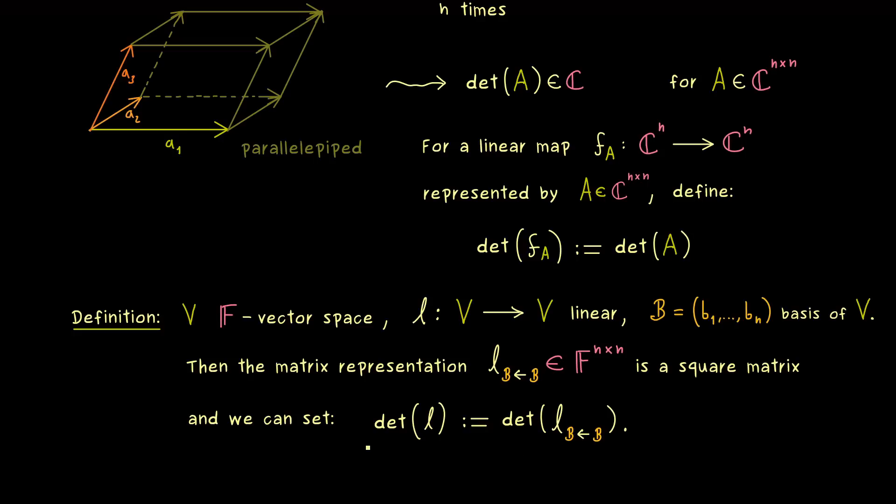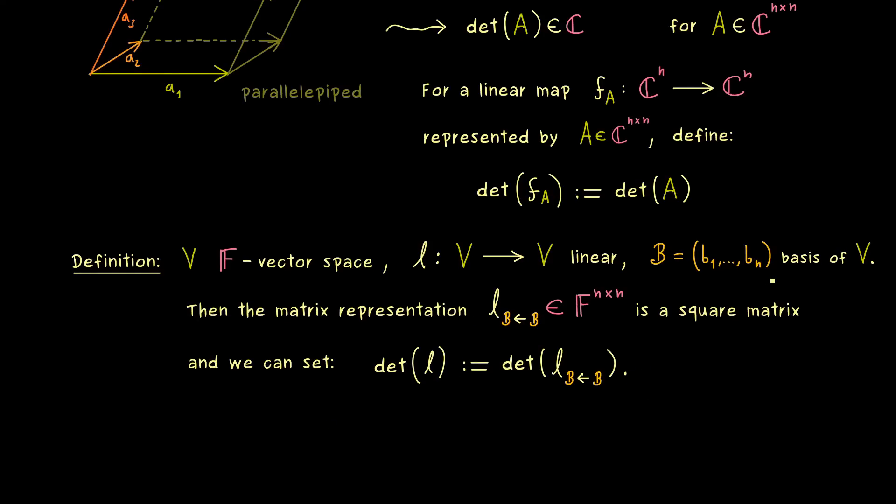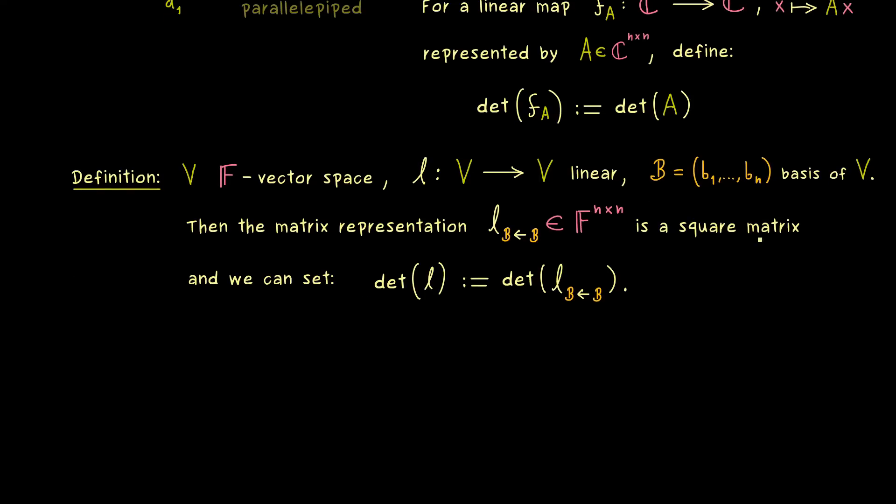However, at the moment, it's not clear that this number here is well defined. Simply because there is a choice that goes into the definition, namely the choice of the given basis. This is different to the linear map from before, because there F was clearly defined as the linear map that sends x to Ax. Hence, there was no choice for the matrix A, but now we clearly have different matrix representations for the same linear map L. So we have to check what happens to this number when we take a different basis of the vector space V.